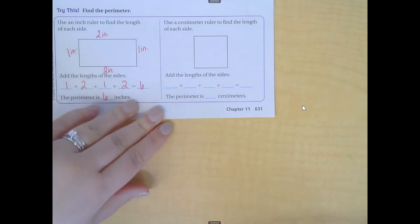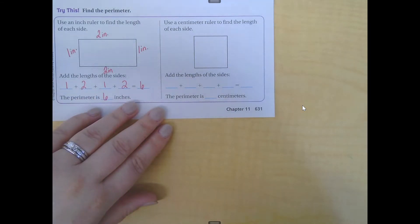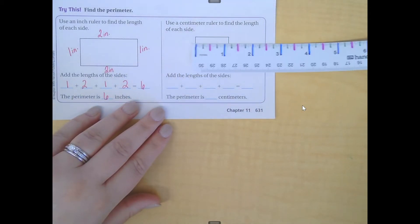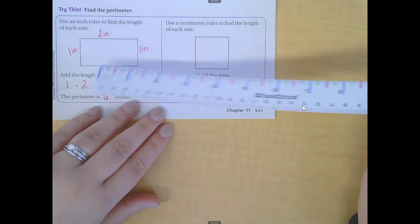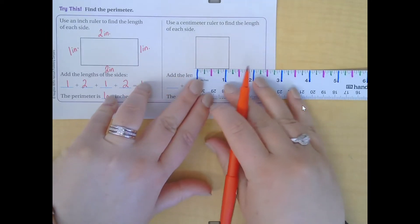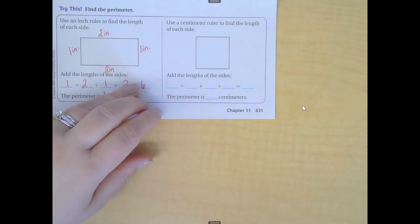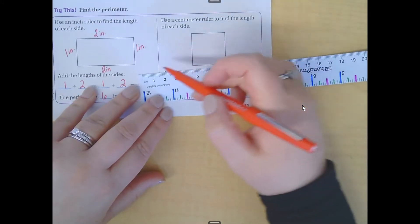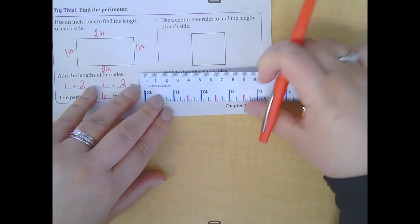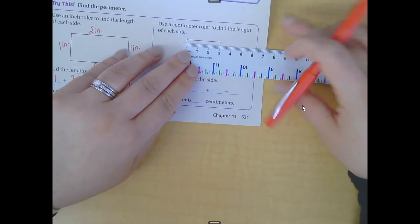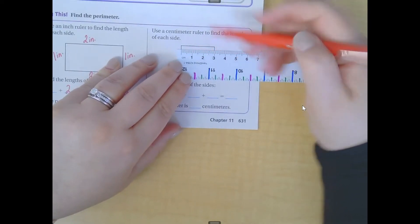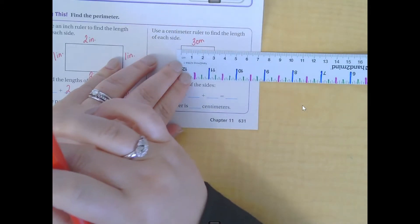It says use a centimeter ruler to find the length of each side. This is why it's so crucial to read your directions carefully — if you didn't read this and you just started measuring in inches, your answer would be wrong. It's more than one inch. So I'm going to go to the other side of my ruler where it says 'cm' — that's the abbreviation for centimeters. Centimeters are much smaller than inches. I'm going to measure, remembering I start on the zero mark, not the end of the ruler. This side is three centimeters long.